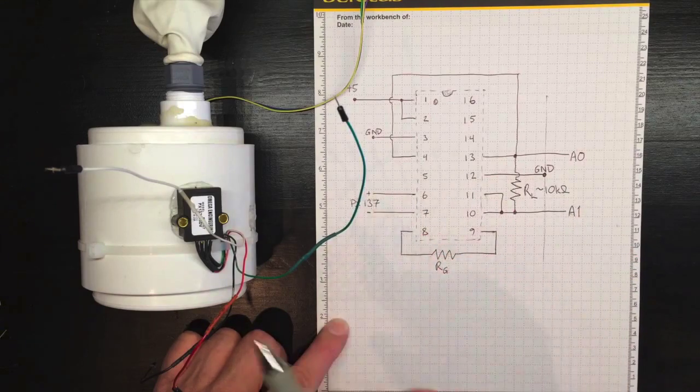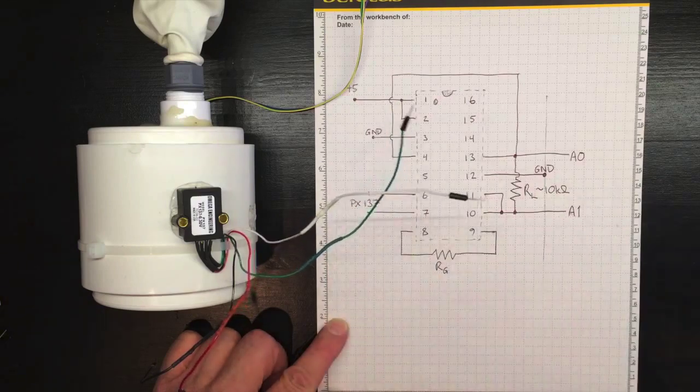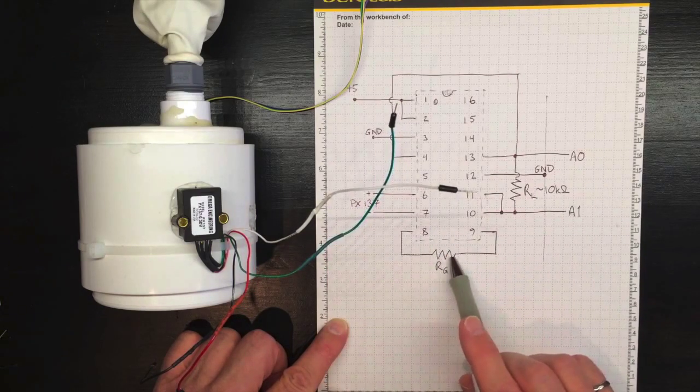Pins 6 and 7 will be the green and white inputs from the PX137. And across pins 8 and 9, we'll have a gain resistor connected.